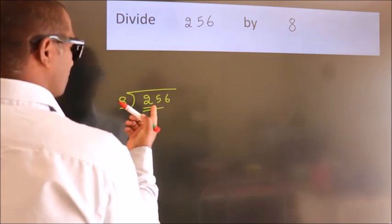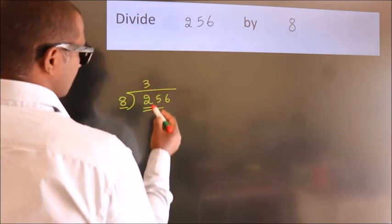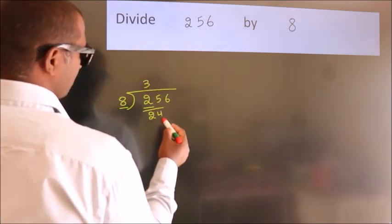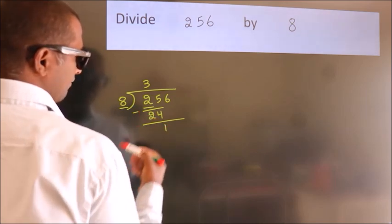A number close to 25 in the 8 table is 8 threes, 24. Now, we should subtract. We get 1.